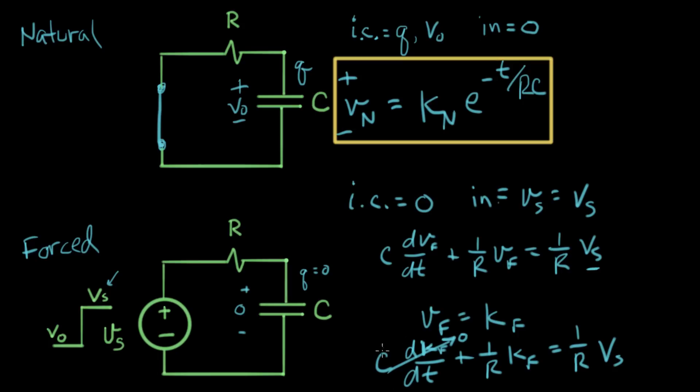So, this first leading term here of our differential equation goes to zero. And now, I'm left with KF times one over R equals VS times one over R. So, that makes KF equal to VS. So, I'll tuck this in here. Our forced response, VF equals VS.